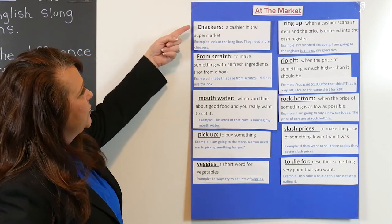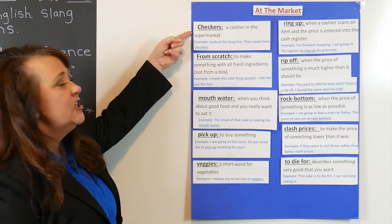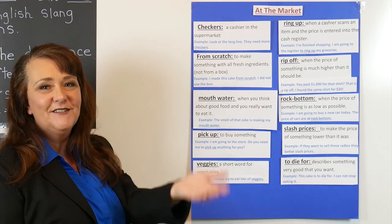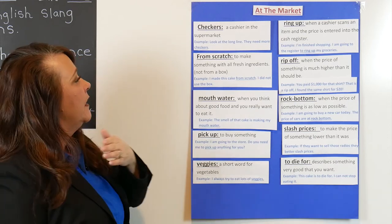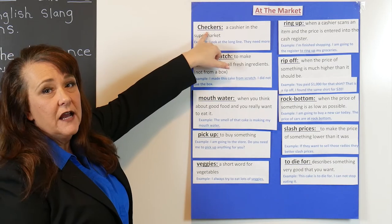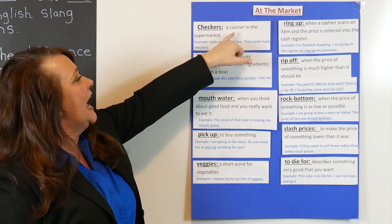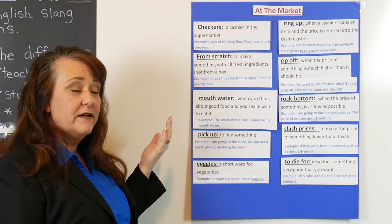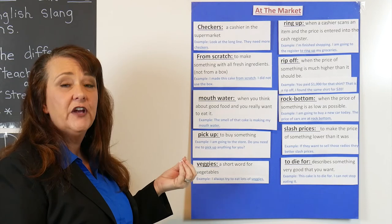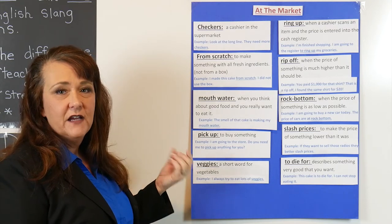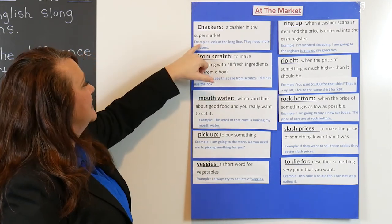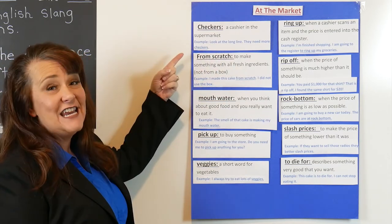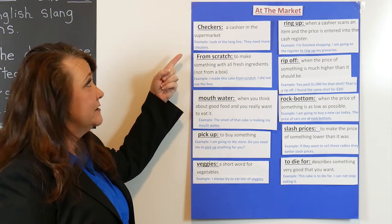The first word is 'checkers.' Checkers is a person or a cashier in the supermarket — the ones who take your money. They're called checkers. Here's an example sentence: 'Look at that long line. They need more checkers.'